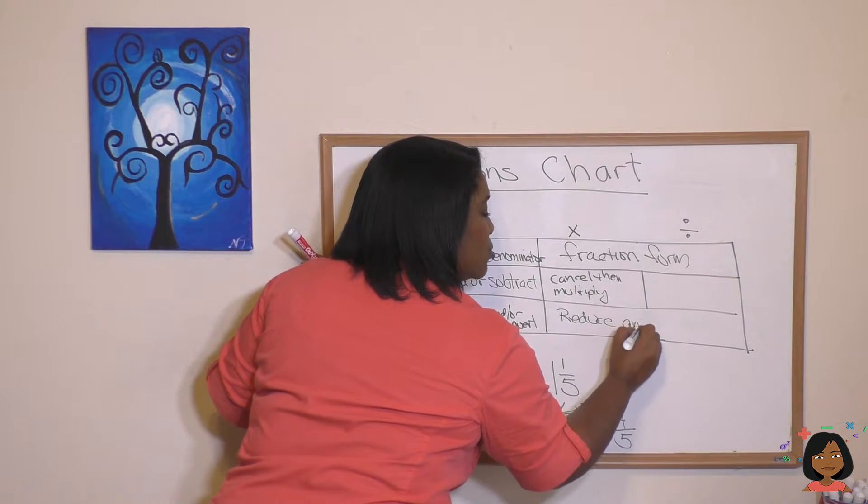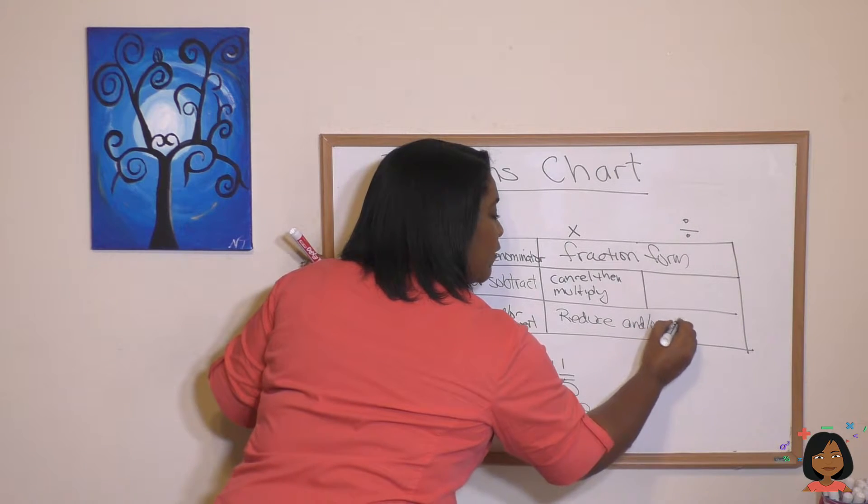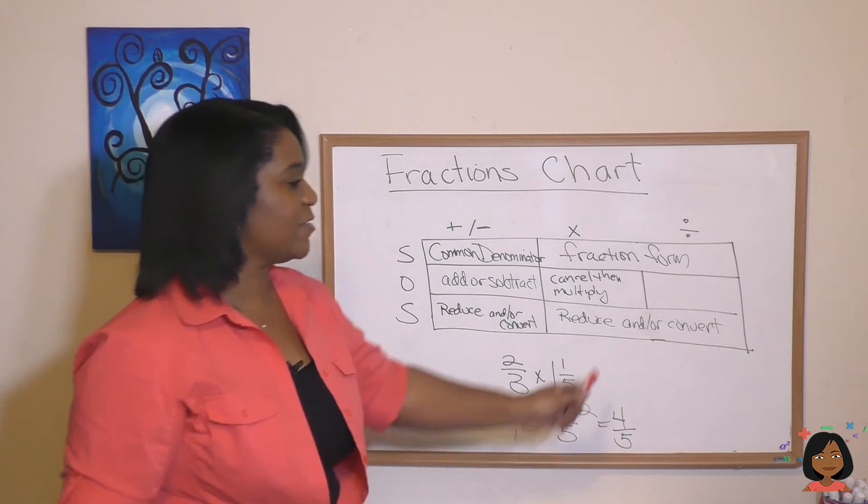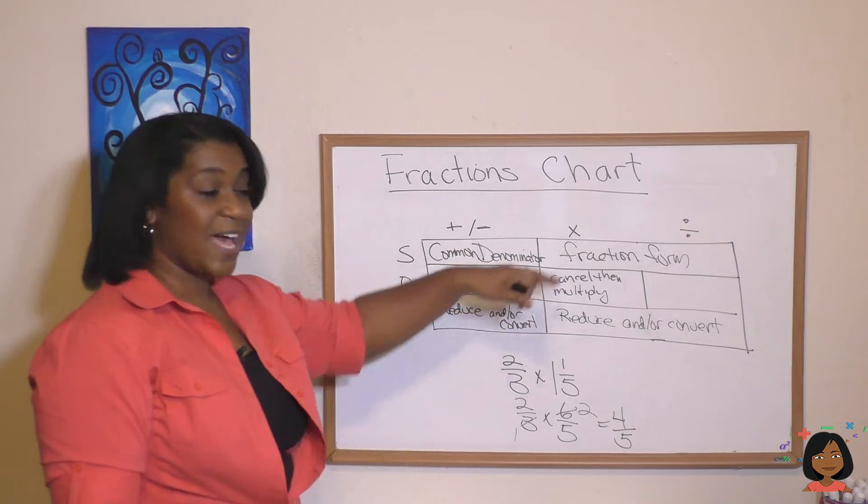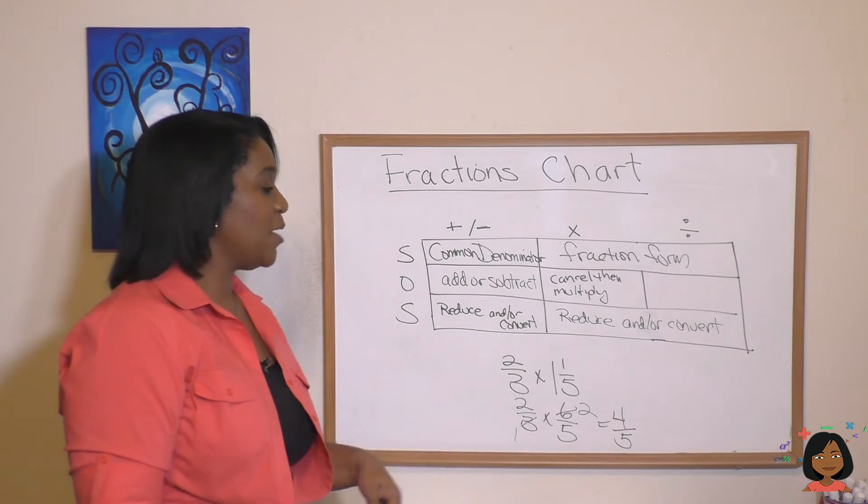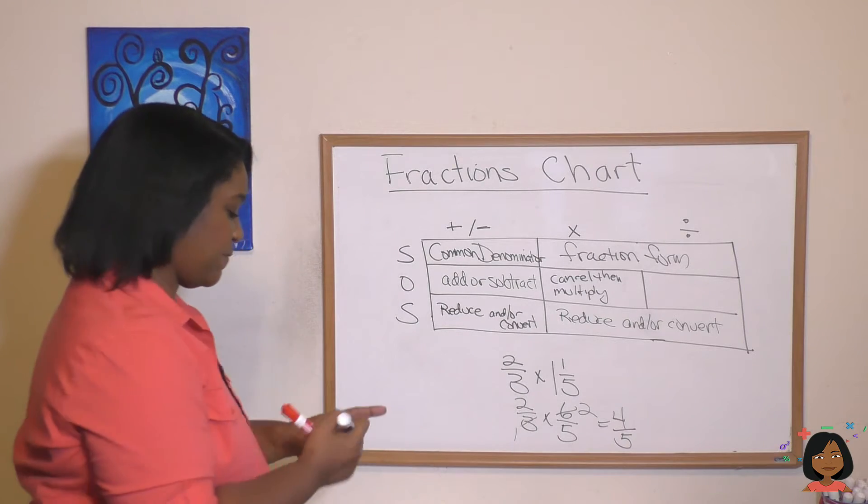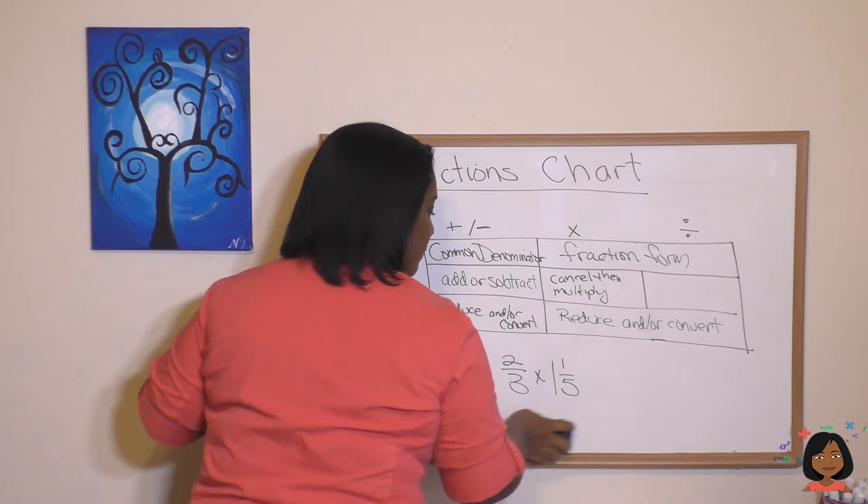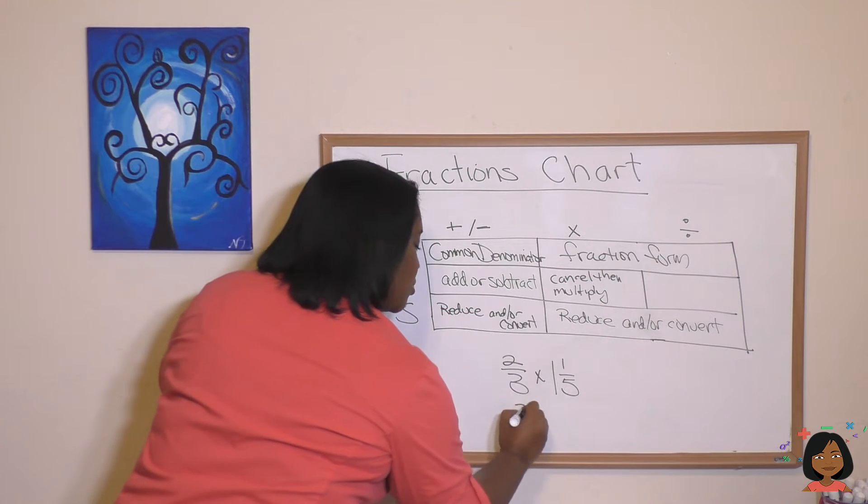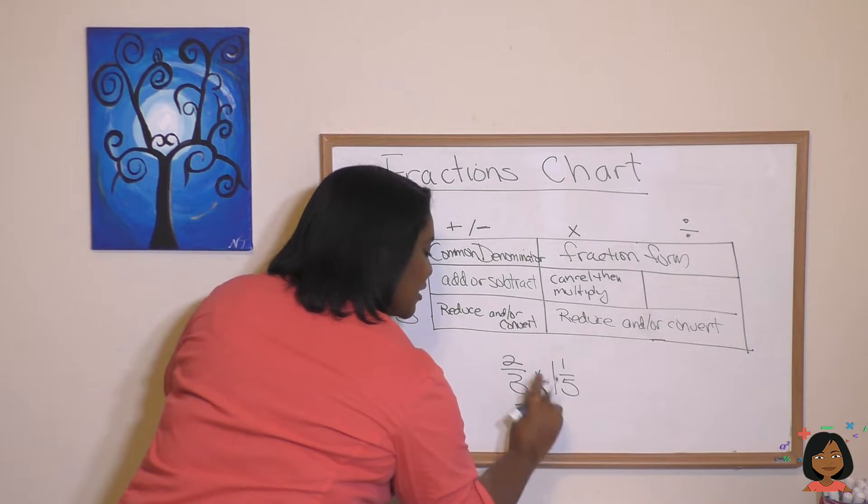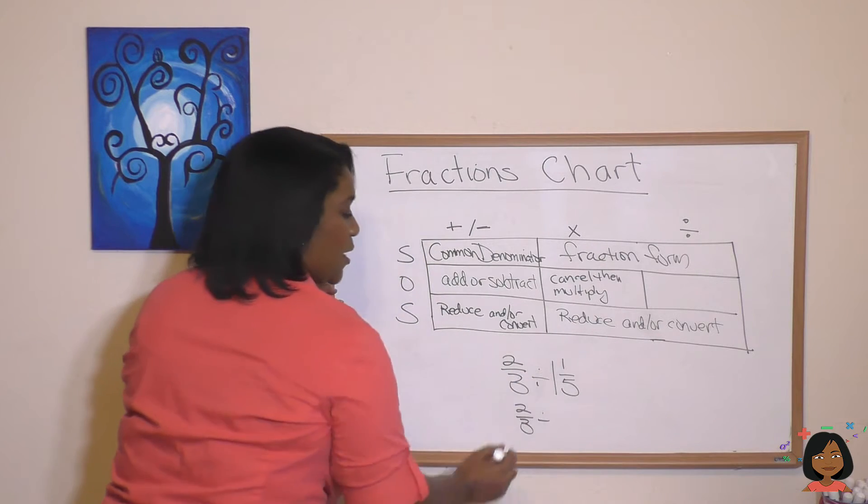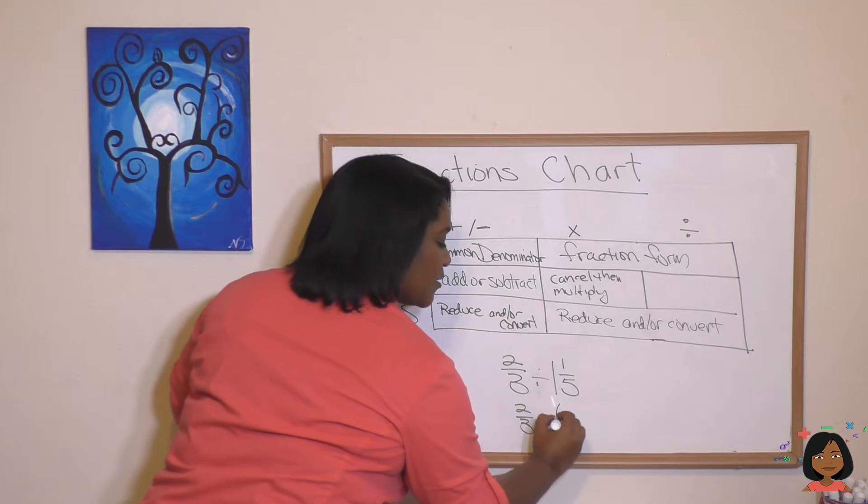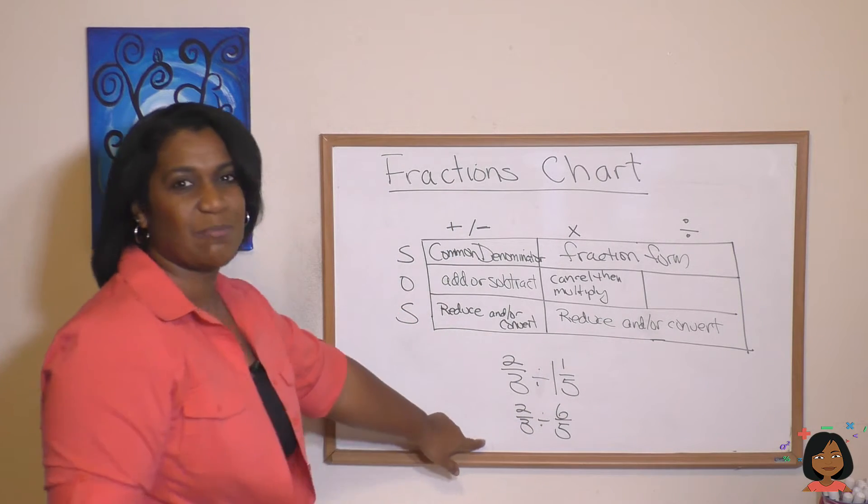Okay, now notice I have this big gaping hole here for the division. It starts out the same: put it in fraction form. But when we get here, let's say I had a division sign here. Let's go ahead and change this up. All right, so we did our 2/3, and let's say this was a division sign, divided by, put it in the fraction form—5 times 1 is 5 plus 1 is 6, 6/5. We'd have to do something first with this division sign, wouldn't we?